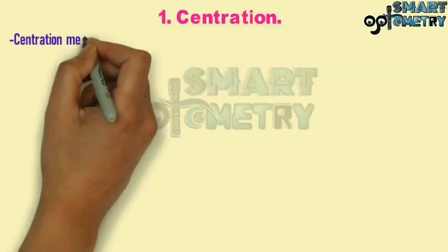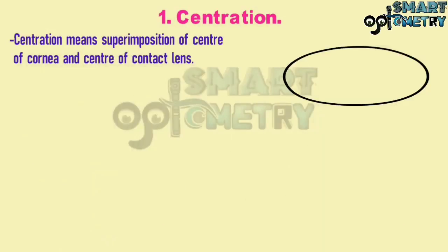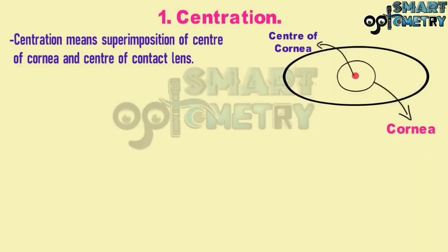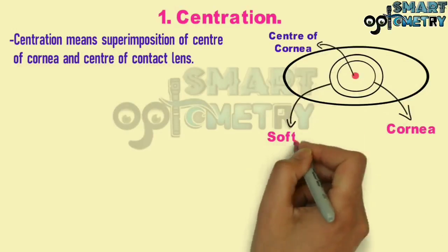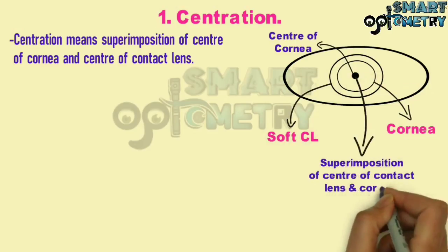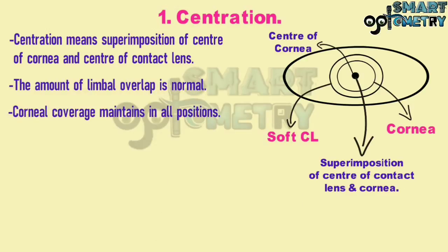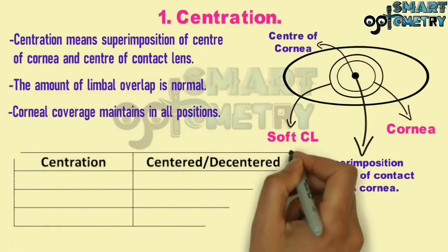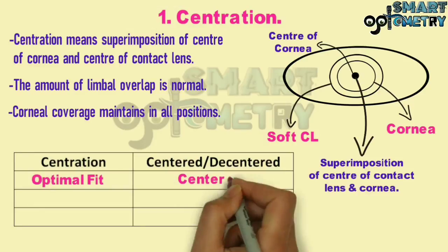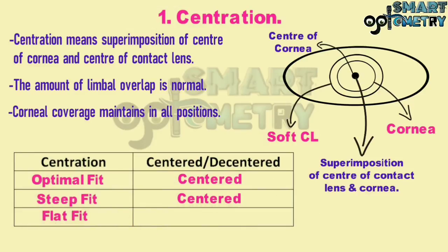1) Centration: Centration means superimposition of the center of the cornea and the center of the contact lens. Here in the figure, this is the cornea, the center of the cornea, the soft contact lens, and the superimposition of the center of contact lens at the cornea. Normal corneal coverage is maintained in all positions. In optimal fit it will be centered; in a steep fit it will also be centered; in a flat fit it will be decentered.